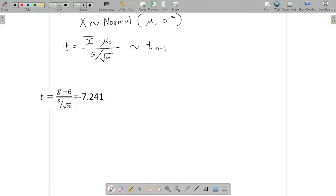Let's suppose that this is that particular t distribution. As far as our problem from the previous video is concerned, the t statistic has been evaluated as minus 7.241. This is the curve of the t distribution.